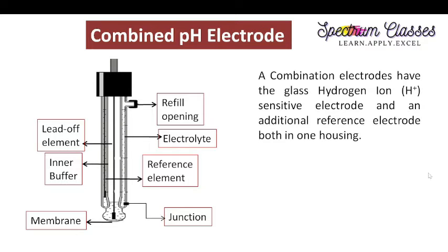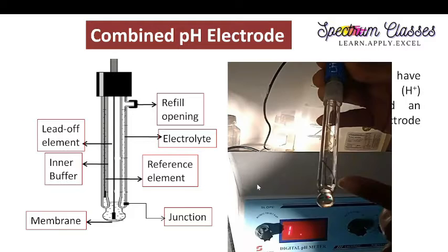Here is the combined pH electrode. A combination electrode has the glass hydrogen ion (H+) sensitive electrode and an additional reference electrode, both in one housing. This is the schematic diagram for the combined pH electrode. Here is the refilling opening, and this is the outer container. Inside the outer container is the filling of electrolyte, which is KCl. Here is the reference electrode which is dipped in this electrolyte, and here is the junction, which serves as the connection between the reference electrode and the working solution. Here is the glass bulb, which has the glass membrane, and here is the lead-off element which is dipped inside the buffer solution.